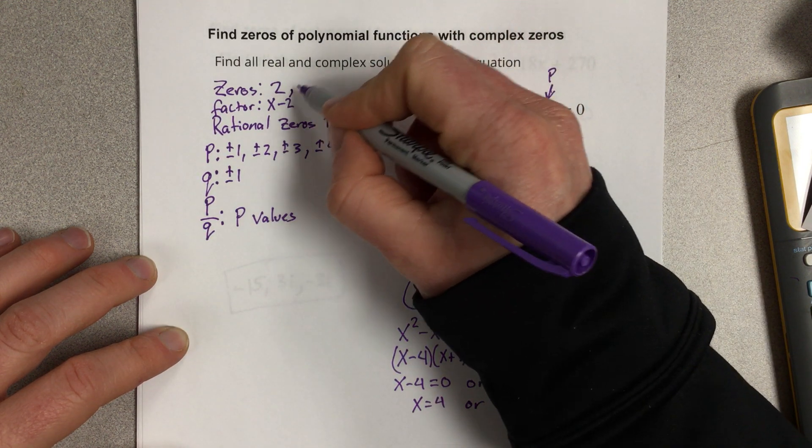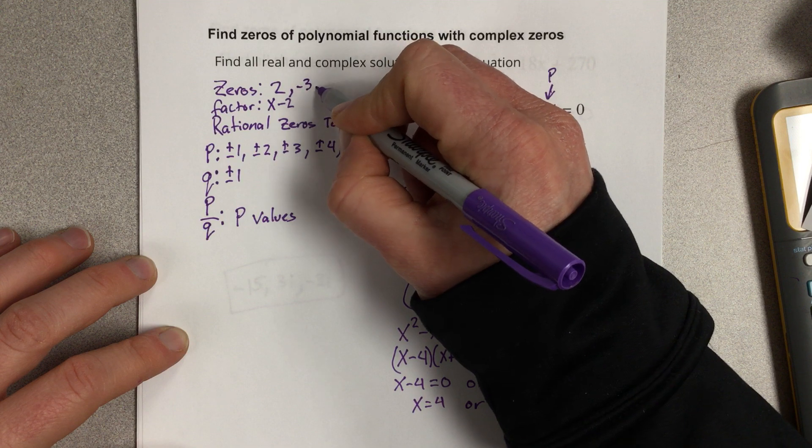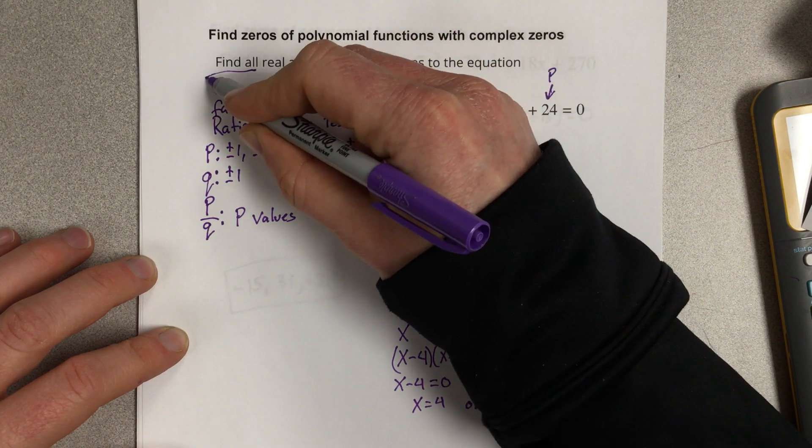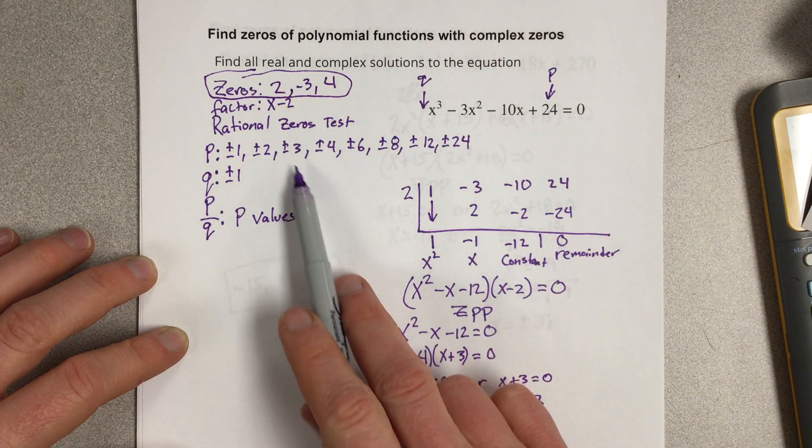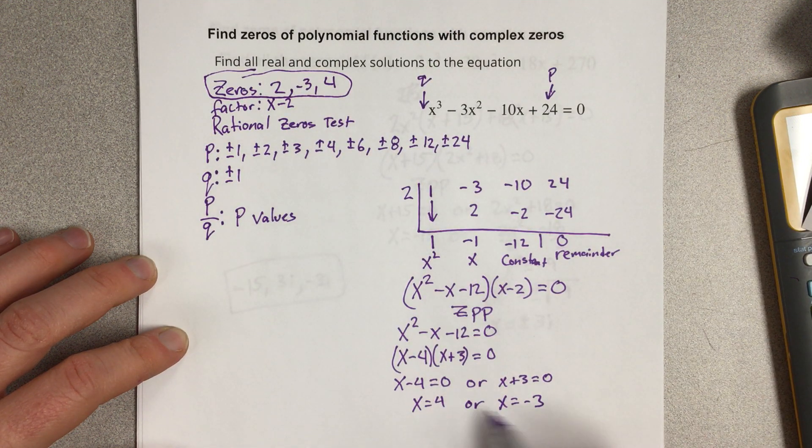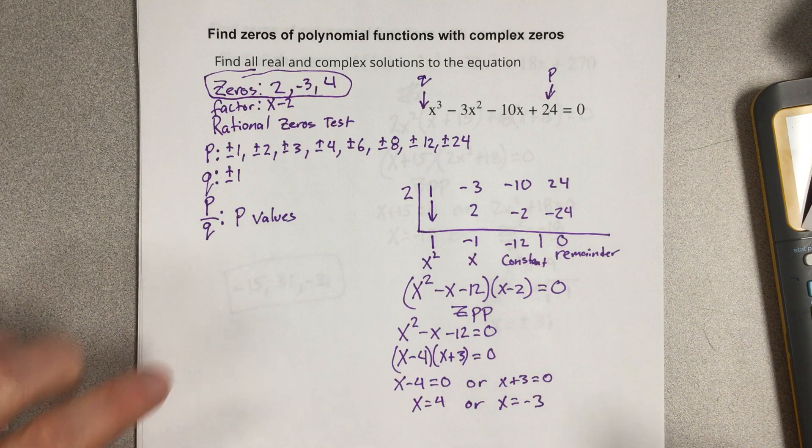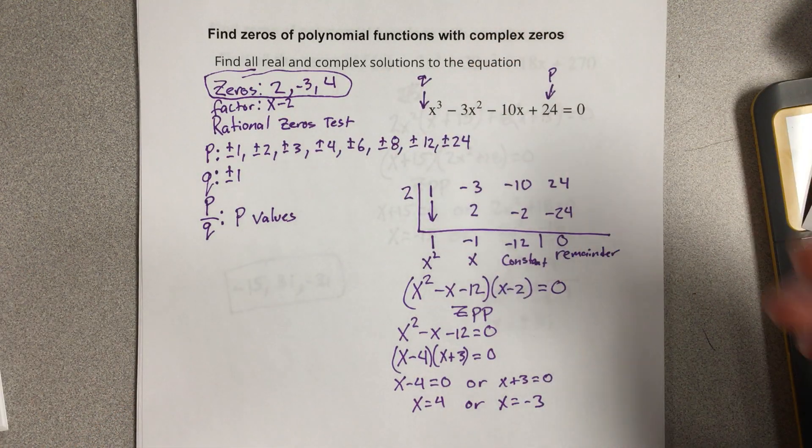So my zeros then are 2, -3, and 4 for my solutions. And I could have just kept going using the rational zeros test and came up with those. But had those been complex numbers, I would have tested all those numbers and never found them.